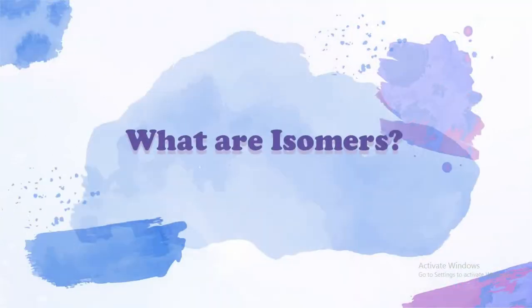Isomers are molecules that have the same numbers of the same kinds of atoms and hence the same formula, but differ in chemical and physical properties.